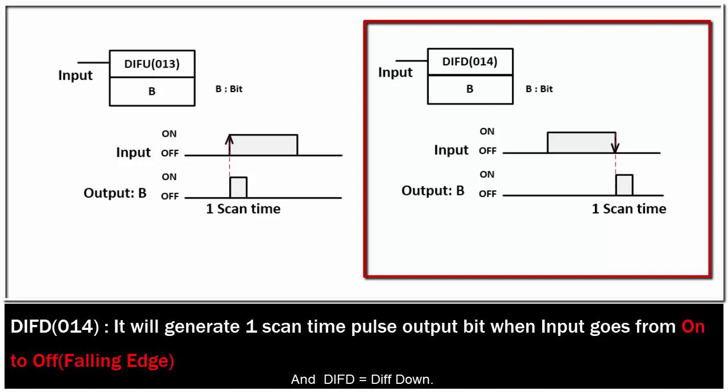And DIFD or DIFD will generate one scan time pulse through a specified bit B when falling edge input. That means DIFD will generate one pulse when the input goes from ON to OFF.